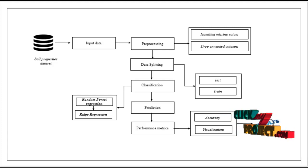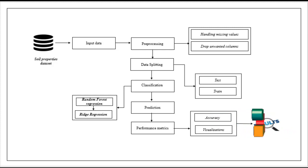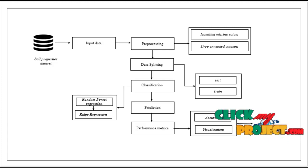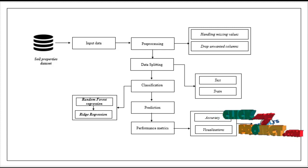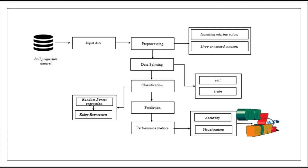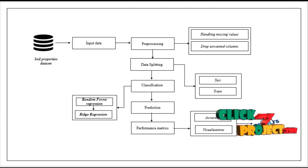The split data is carried to the classification module, where we implement different ML techniques - random forest regression and ridge regression. With these algorithms we predict the soil properties and recommend the crop based on predicted soil properties. Then we estimate performance metrics like accuracy and error values. The error values must be low; if they are low, the model is efficient.